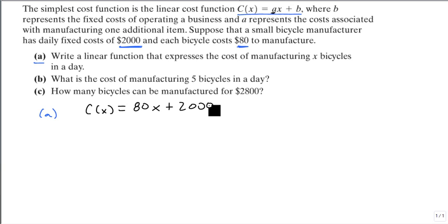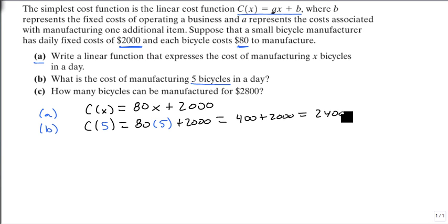Part b asks, what is the cost of manufacturing five bicycles in a single day? This gets a little bit trickier because we're asked to make five bikes. So that's an input. We want to know what is C(5). We plug five in: 80 times 5 plus 2,000, which is 400 plus 2,000, equals 2,400. So if I make five bikes in a day, it'll cost me $2,400 to run my business that day.